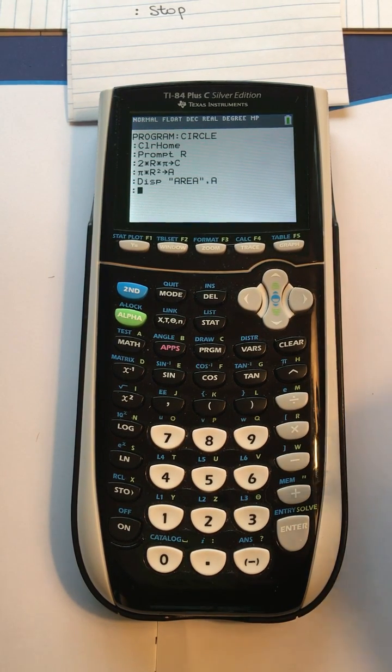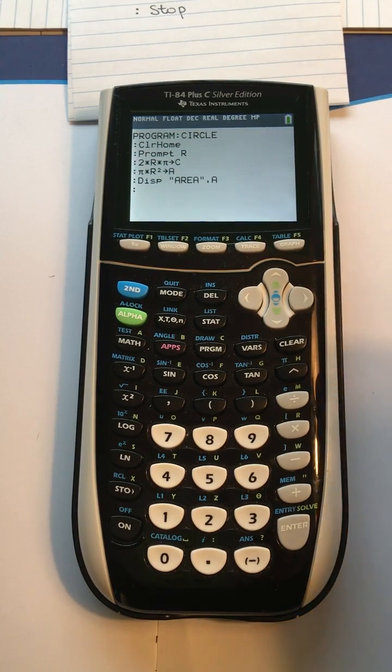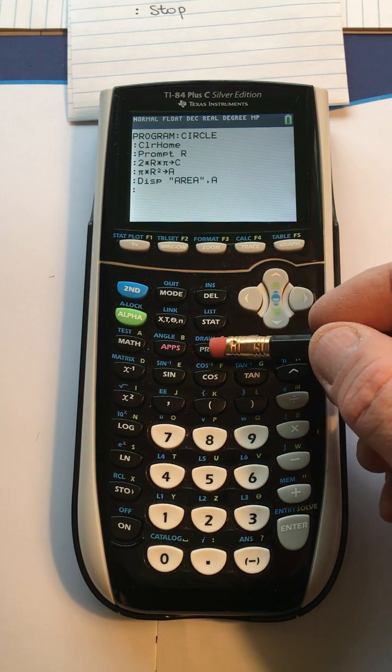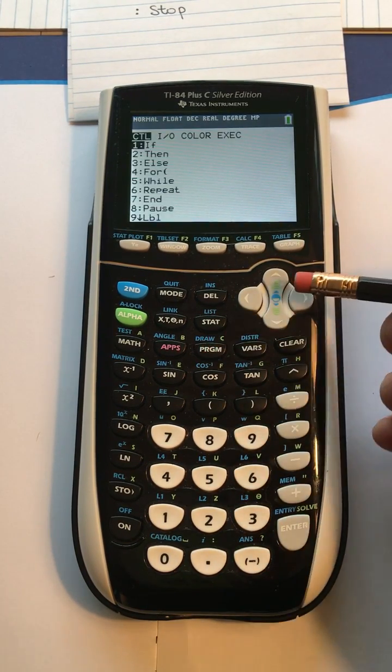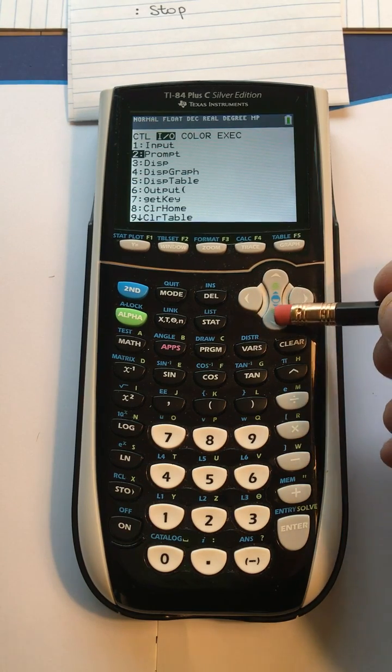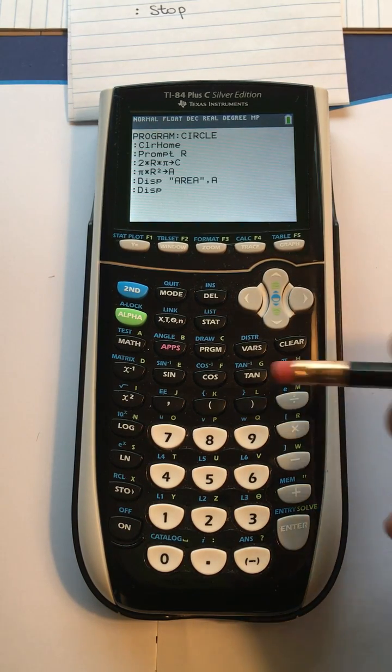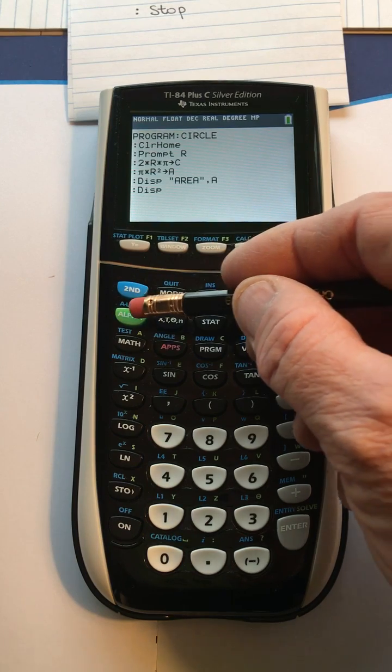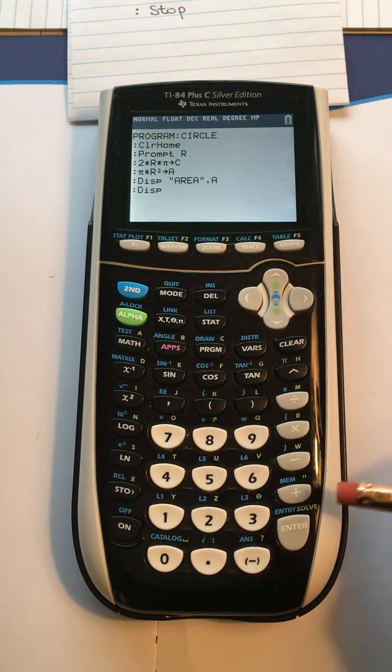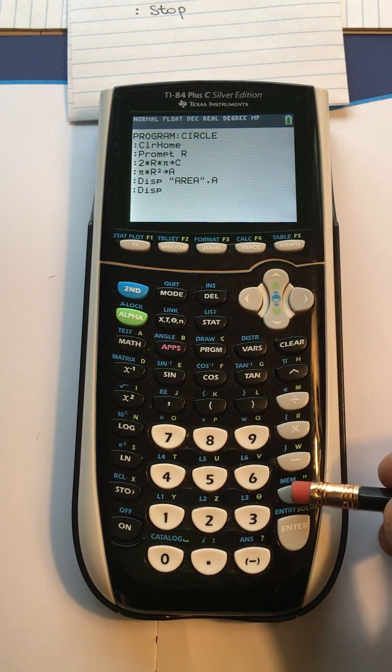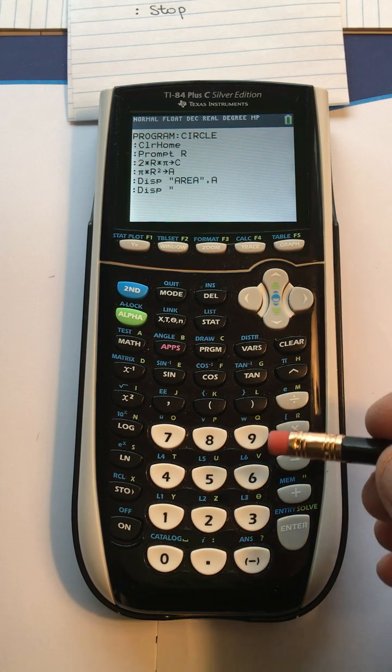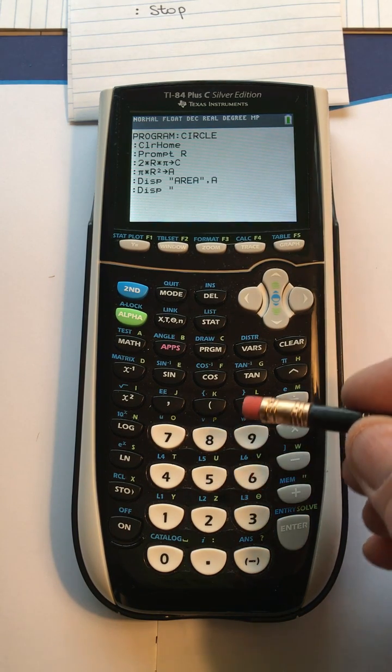It can be done faster by just doing alpha lock once you put the command in there, so let's try that. Program, IO, display, and now we can do second alpha lock, and that keeps it in alpha until we're done. It'll be faster. Quotes, and we're going to put in CIRC for circumference.